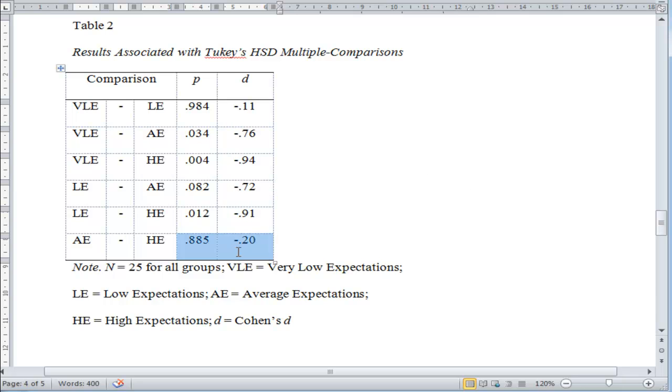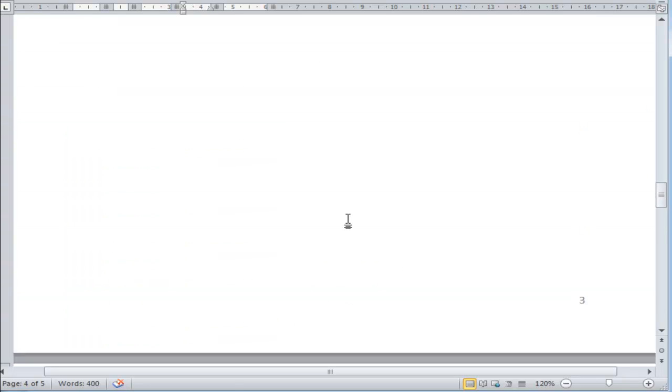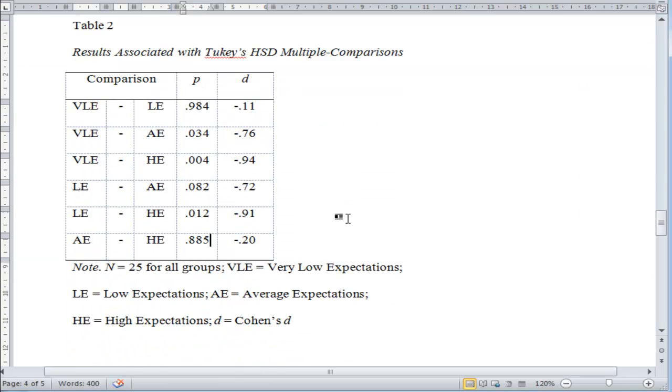And here's a non-significant result between average expectation and high expectation, p equals 0.885 and negative 0.20. So I think that's probably the best way to report a series of a large number of HSD comparisons.